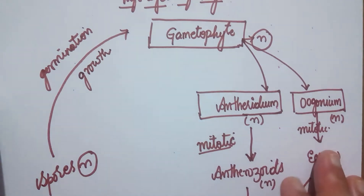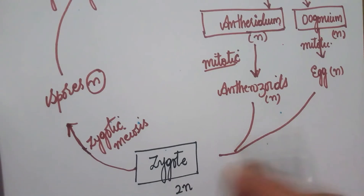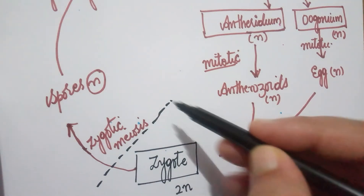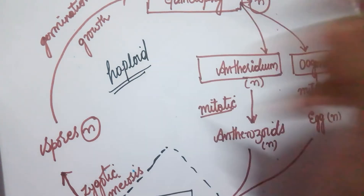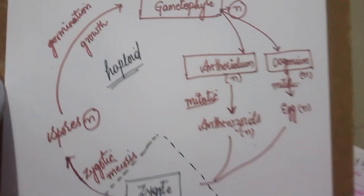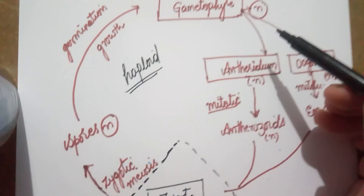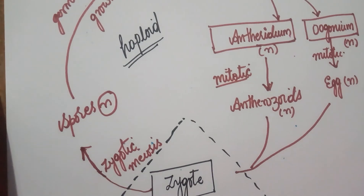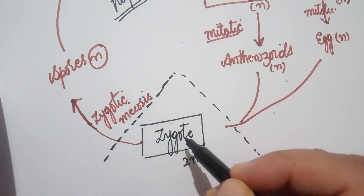These haploid spores upon germination and growth give rise to the gametophyte. If you look at the entire life cycle, you can see that except for the zygote, the entire life cycle is predominantly made up of haploid phases. The only diploid structure present is the zygote.